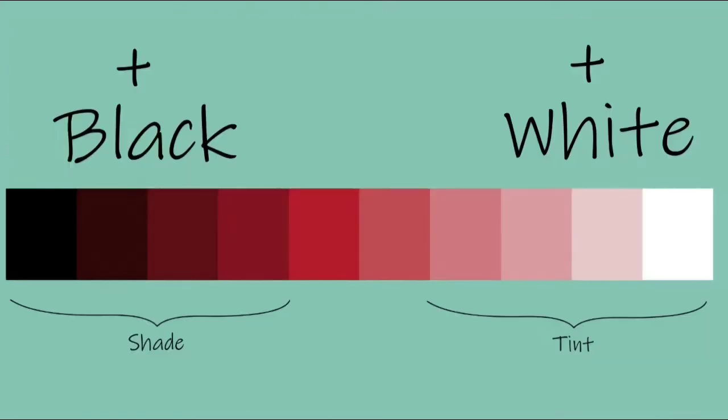We tend to think of value as only black and white, but any color — any hue — can also have a value range. A hue is just a fancy name for color, so yellow, green, red, blue — those are hues. Any hue has a similar scale from dark to light. We lighten it by adding white, making a tint, and we darken it by adding black, creating a shade.